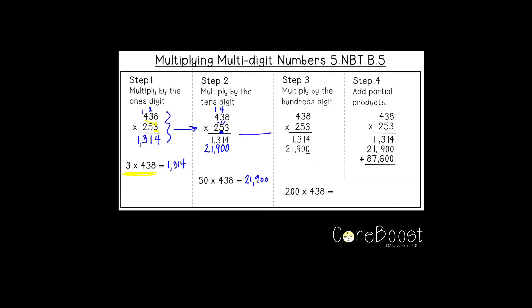Now I'll move this over for the next step. I'm going to multiply the hundreds digit. I have 200 multiplied by 438, so I need two zero placeholders. Two times eight is 16, carry the one. Two times three is six, plus one is seven. Two times four is eight. So 200 times 438 is 87,600.